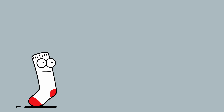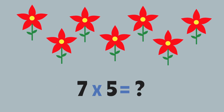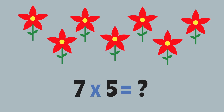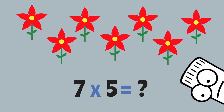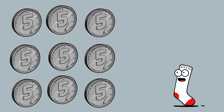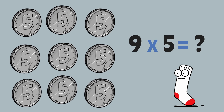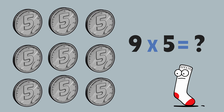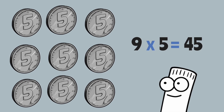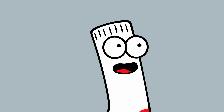Time for some real-world groups of fives. Here are some flowers — we have seven flowers, and each one has five petals. How many petals in total? Seven times five — thirty-five! That's right. I have nine shiny nickels. Each nickel is five cents. How much money is that? Nine times five — forty-five! Good job, you crushed it!